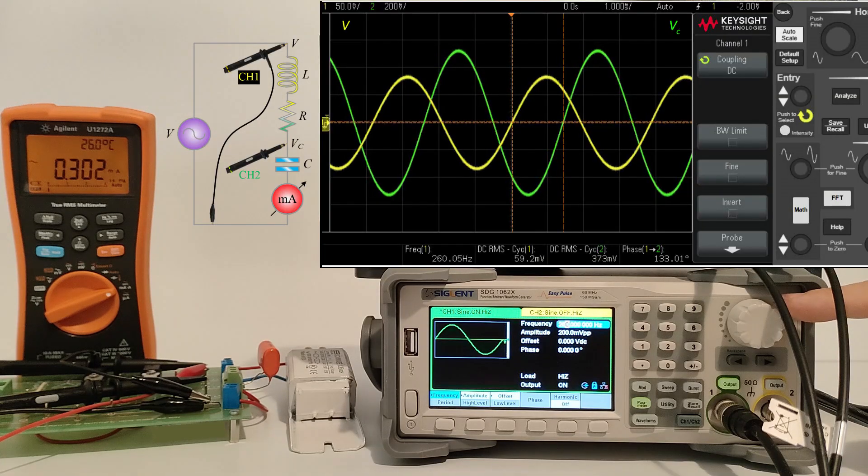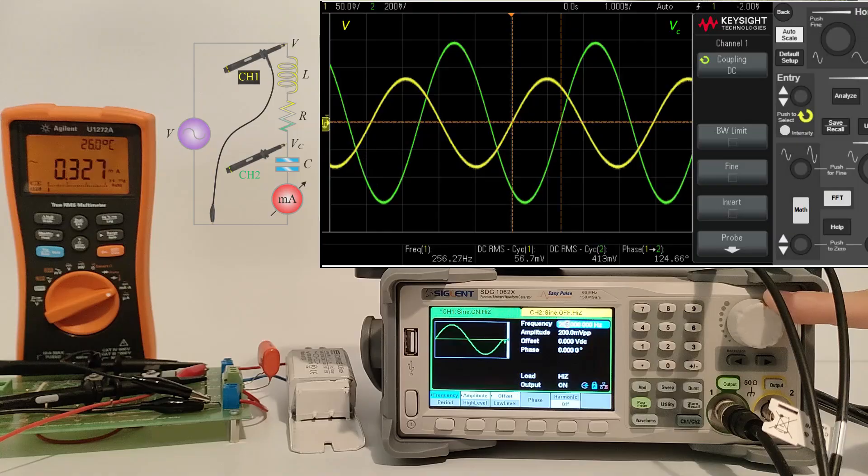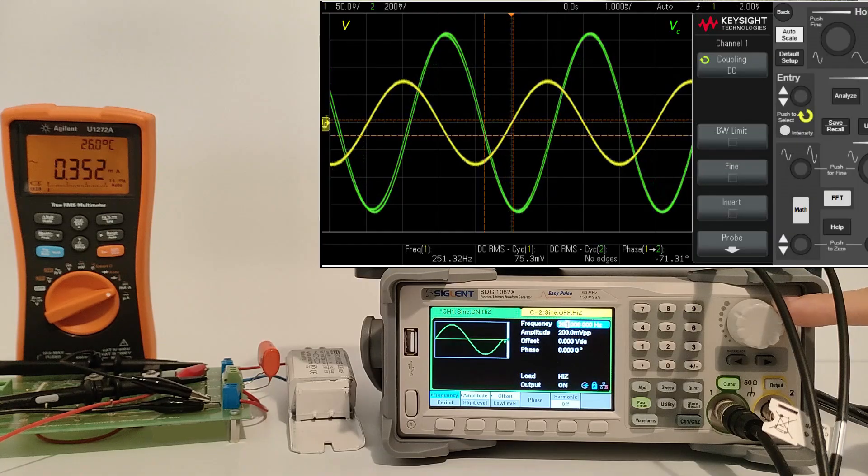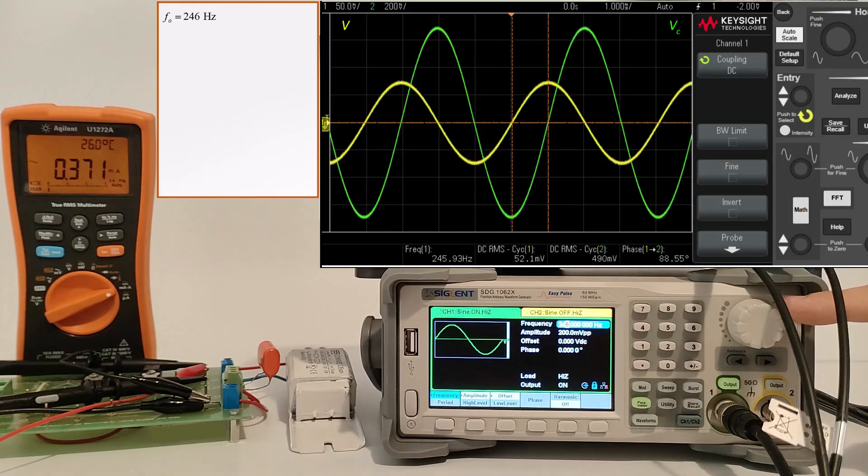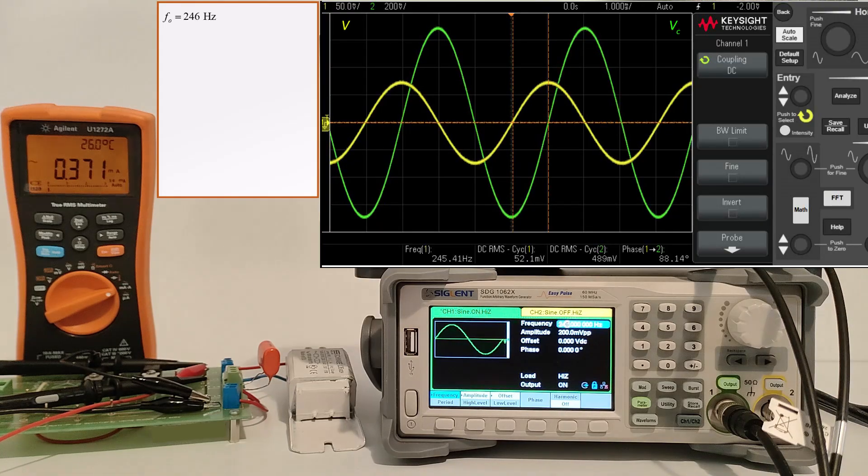We vary the frequency around the theoretical resonance value. We observe that at 246 hertz, the current and the capacitor voltage take the maximum value, while the phase difference is about 90 degrees.